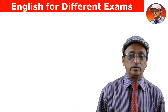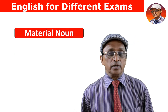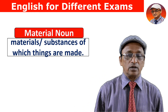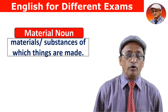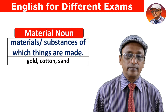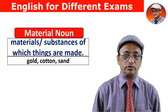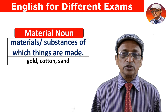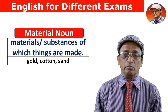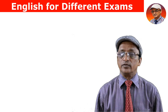The fourth category is material noun. Material noun refers to materials and substances of which things are made. For example, gold is a material noun because out of gold many things are made. Cotton is a material noun. Similarly, sand — all these come under material noun.